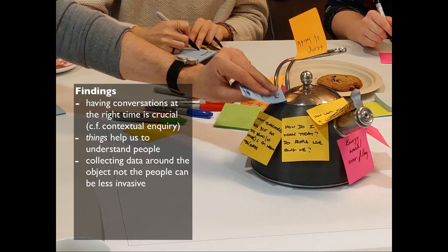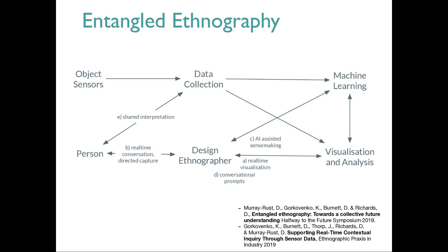This really showed us that having conversations at the right time is crucial — by the end of the day someone's probably forgotten what was going on in that interesting interaction. People didn't mention stuff in the debrief at the end of the experiment that we did manage to catch through the data, photos, and conversations. We also get a sense that we can enlist things to help us understand people: by putting objects around people, there are more sources for data collection and interaction. This relates to the idea of 'thing ethnography' — if we collect data about the object rather than the people, there are ways to make data collection informative without being too invasive.